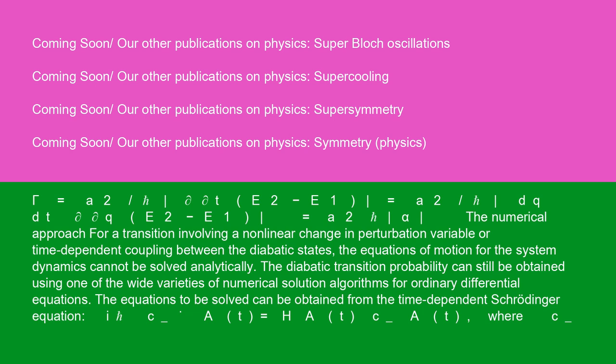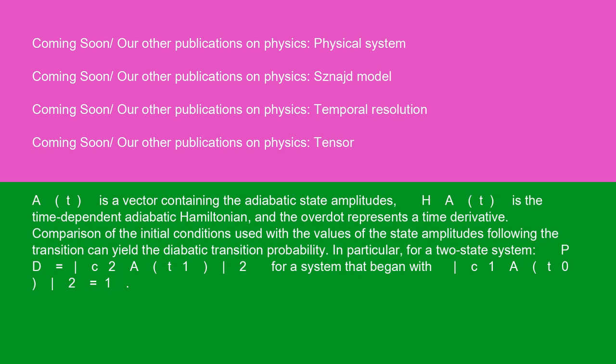For a transition involving a non-linear change in perturbation variable or time-dependent coupling between the diabatic states, the equations of motion for the system dynamics cannot be solved analytically. The diabatic transition probability can still be obtained using numerical solution algorithms for ordinary differential equations. The equations to be solved come from the time-dependent Schrödinger equation: i*C-dot_AT = H_AT * C_AT, where C_AT is a vector containing the adiabatic state amplitudes, H_AT is the time-dependent adiabatic Hamiltonian, and the dot represents a time derivative. Comparison of the initial conditions with the state amplitudes following the transition yields the diabatic transition probability. In particular, for a two-state system: P_D = |C2_AT(t1)|² for a system that began with |C1_AT(t0)|² = 1.